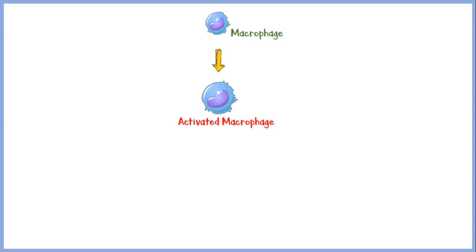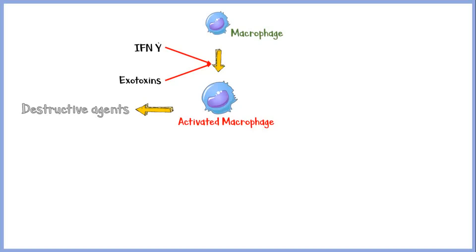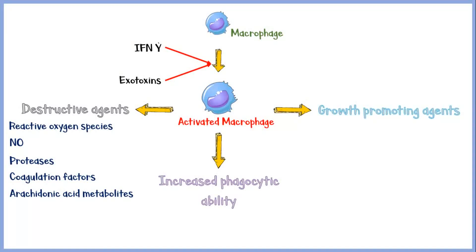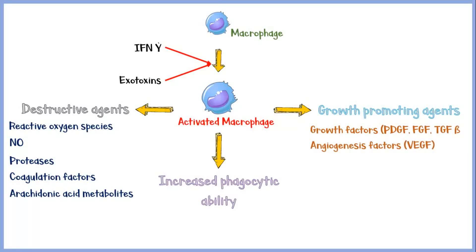The macrophage must get activated in order to perform its functions. Macrophage activation is enabled by interferon gamma, secreted by activated T cells, and certain exotoxins secreted by pathogenic organisms. Activated macrophages have several functions: they secrete destructive agents to get rid of the offending organism or foreign material, including reactive oxygen species, nitric oxide, proteases, coagulation factors, and arachidonic acid metabolites like prostaglandins and leukotrienes. Activated macrophages also have increased phagocytic activity. They also secrete growth-promoting agents for the repairing process, including growth factors like platelet-derived growth factor, fibroblast growth factor, and transforming growth factor beta, angiogenic factors like vascular endothelial growth factor, and fibrogenic cytokines.